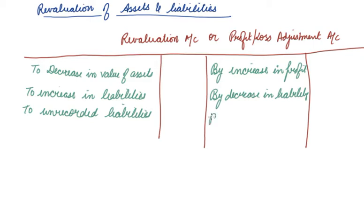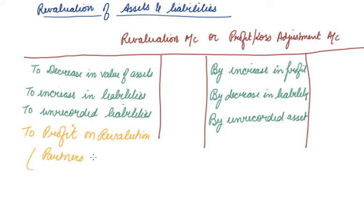On the credit side, we have unrecorded assets. Now, if there is a balance on the debit side, that means profit, because incomes are more on revaluation. This will be transferred to partners' capital accounts in their old profit-sharing ratio.